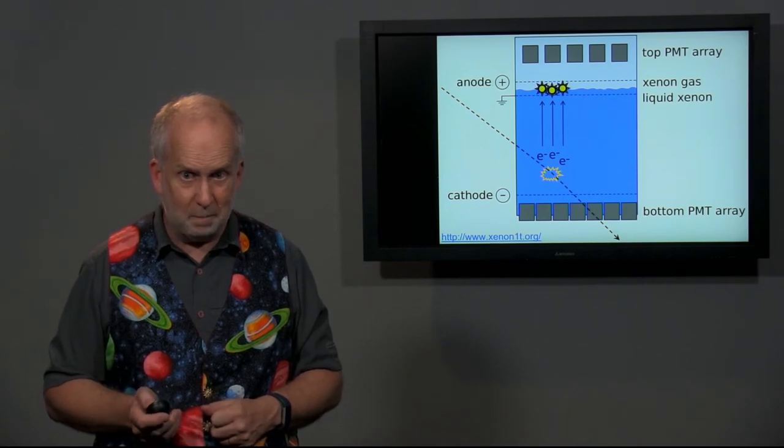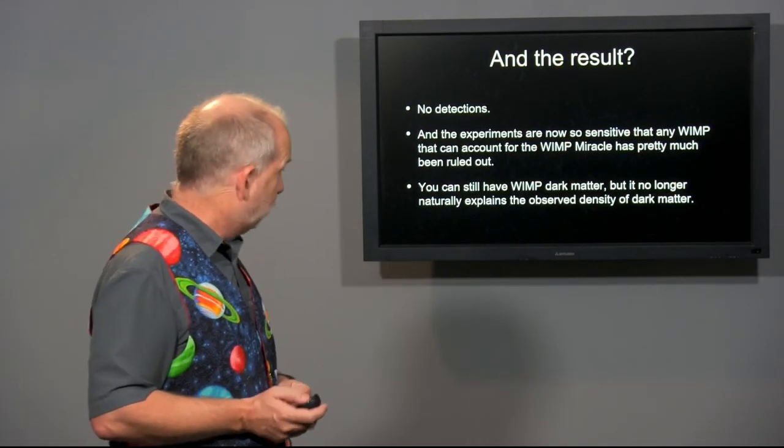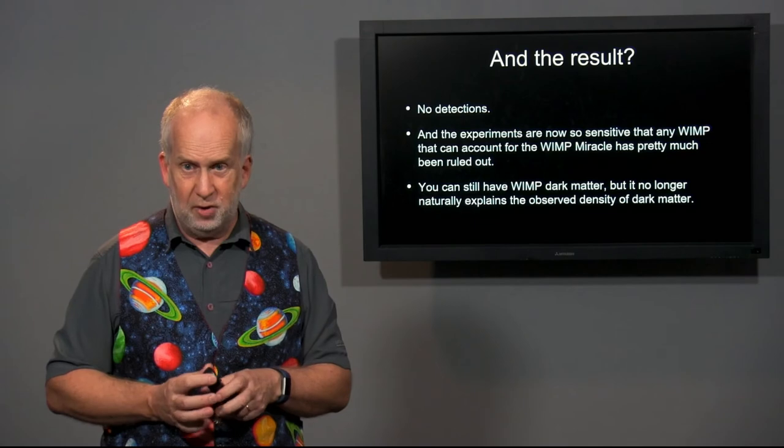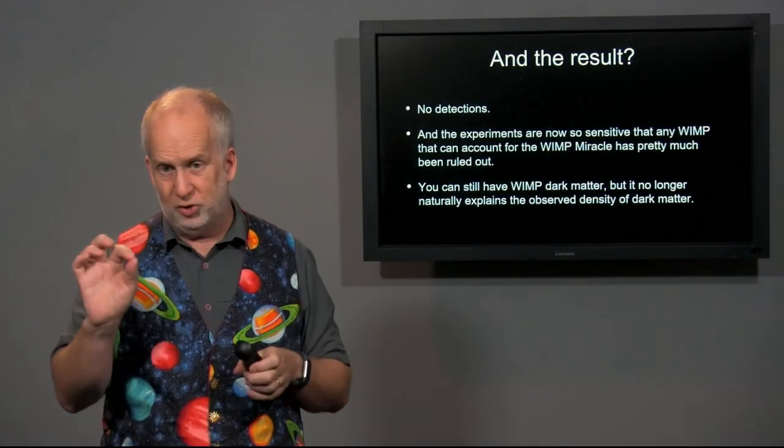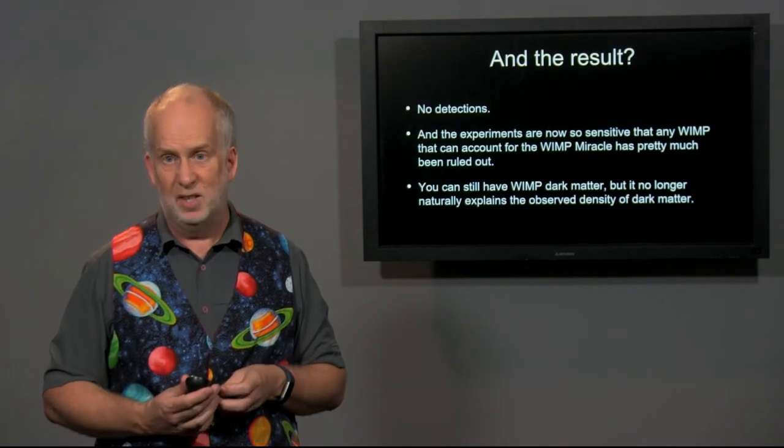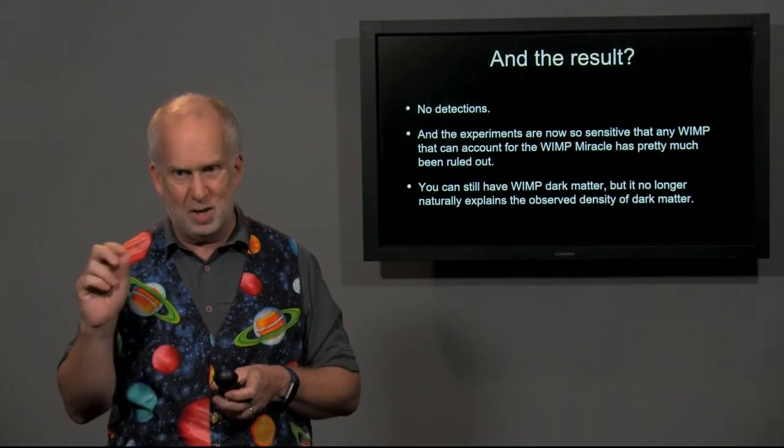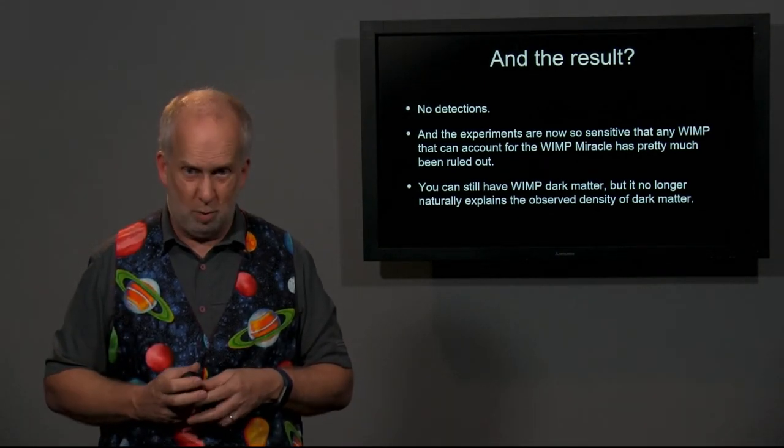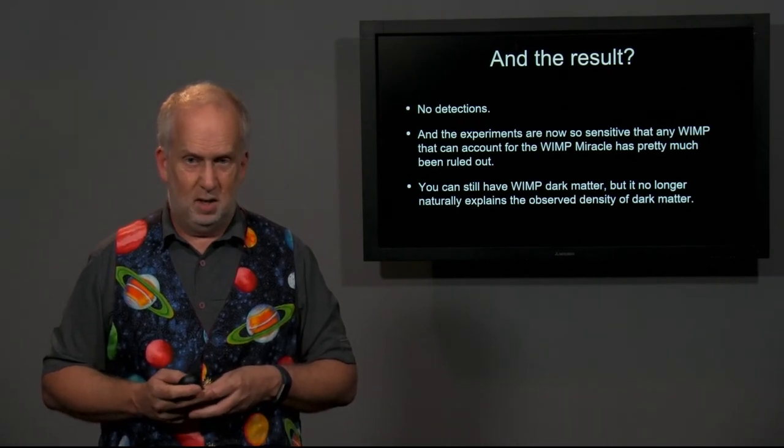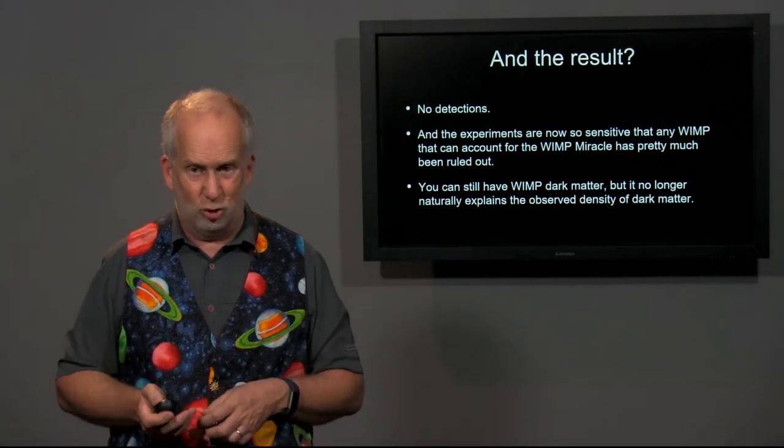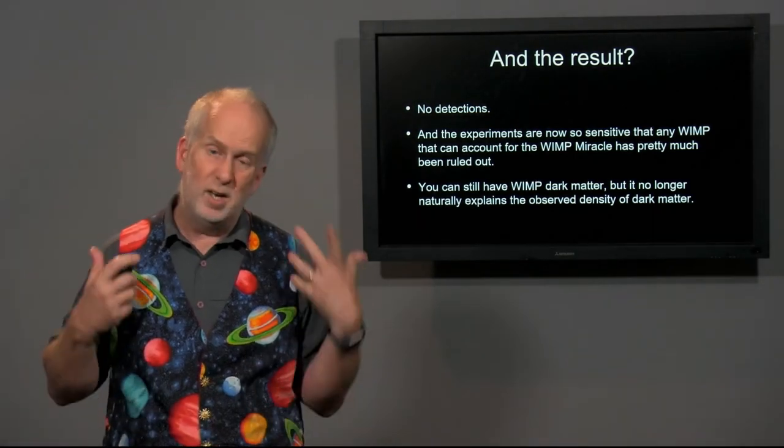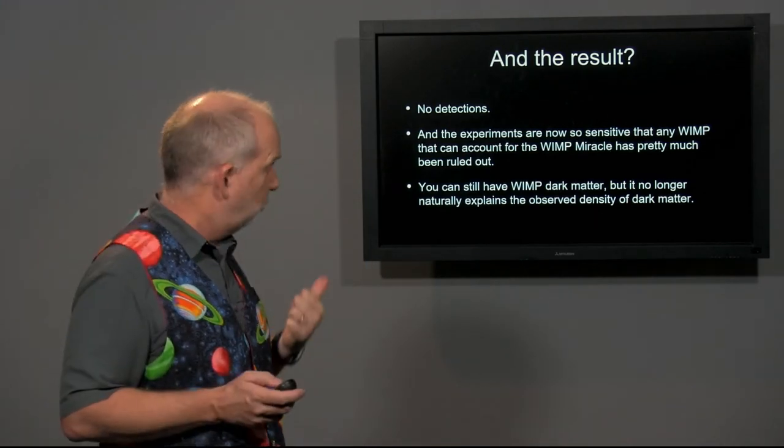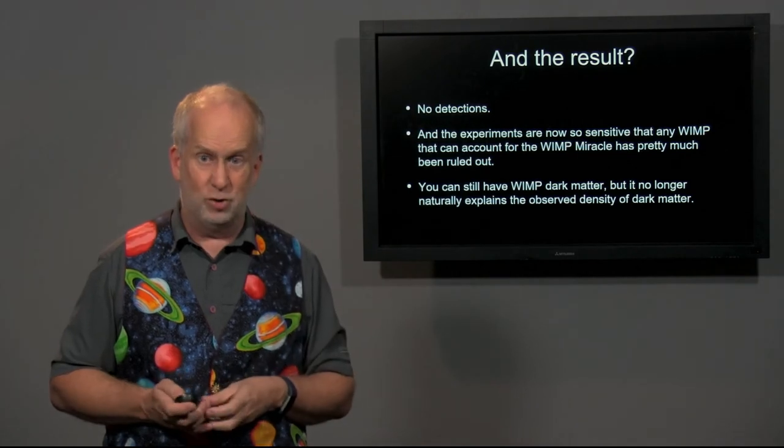And the result is... no detections. And this experiment and some other ones are now so sensitive that if there had been a WIMP with the right mass range and the right cross section to explain the WIMP miracle it pretty much would have been seen. Maybe not quite 100% but certainly 95% certainty. So it looks like WIMPs, which a few years ago were probably the leading contender for dark matter, it looks like they're not dark matter after all or at least they're bleeding on the floor as a theory. Which is a shame because they were a really nice theory they explained a lot of particle physics they weren't just something made up arbitrarily. And as for the next few years new experiments are going to drive many more nails into the coffin of this theory.